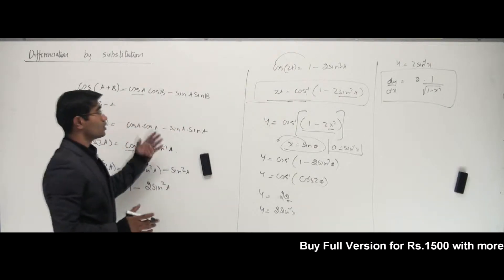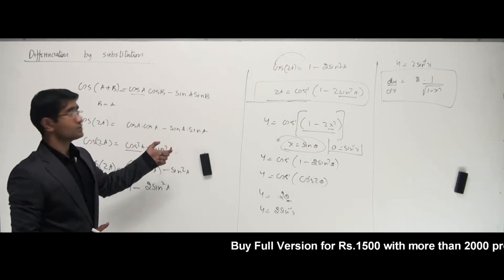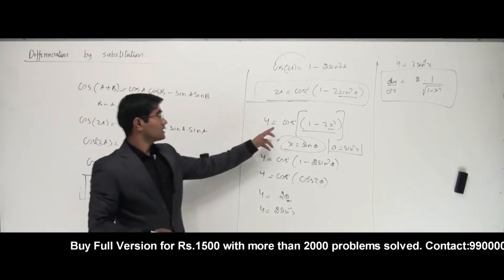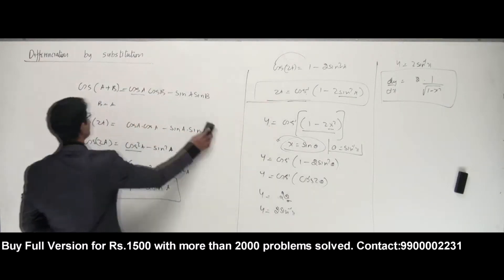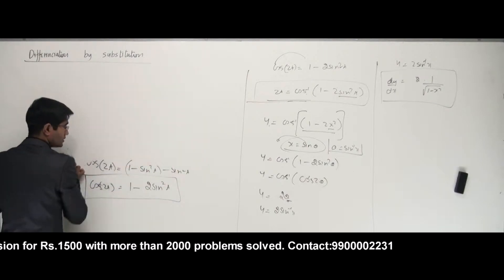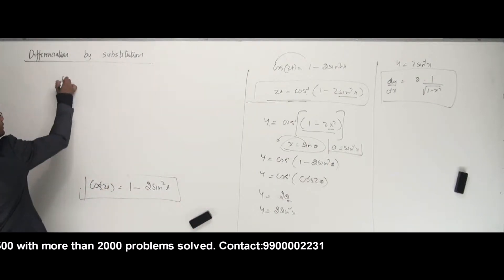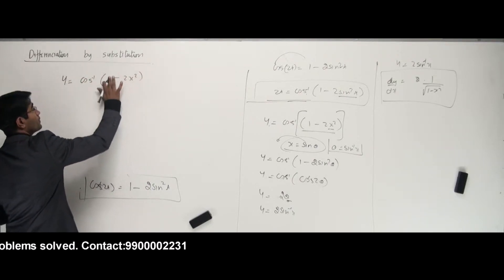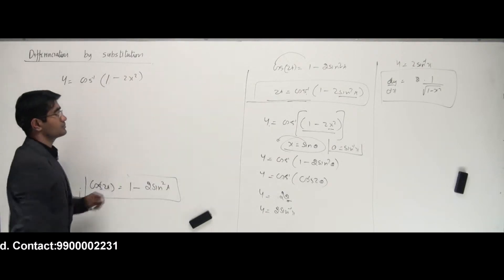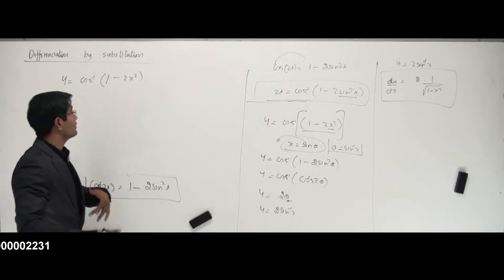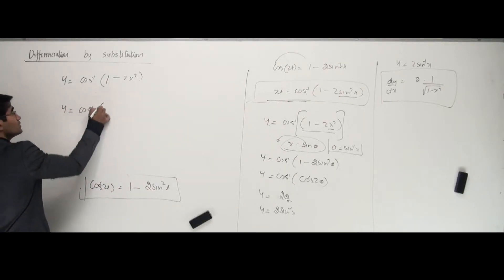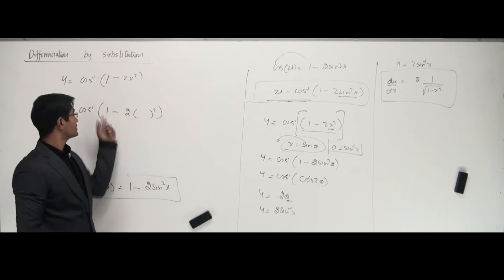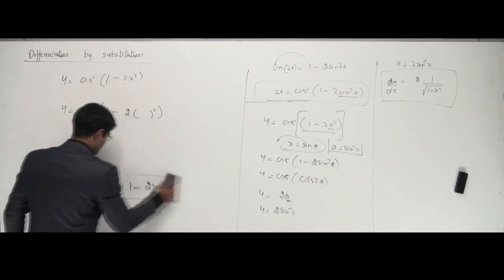We should know how the problem was generated and which formula was used. The more general form is: y equals cos inverse of 1 minus 2 times any function squared. If it is not x squared but some other function, that function should become sin theta, and the whole general format follows.